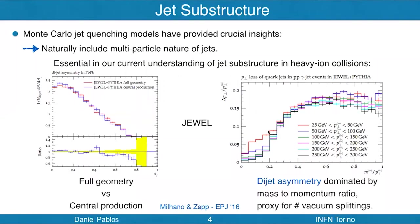It was shown that jet substructure symmetry is really related to the mass-to-momentum ratio, which is a proxy for the number of vacuum splittings. Once the hardest emission within the angular scale of a jet is given, this sets a very important scale of the jet, such as its mass, and it determines the future phase space of such a jet. This vacuum-like part of the physics is essential to understand substructure symmetry in JEWEL and in many other models.